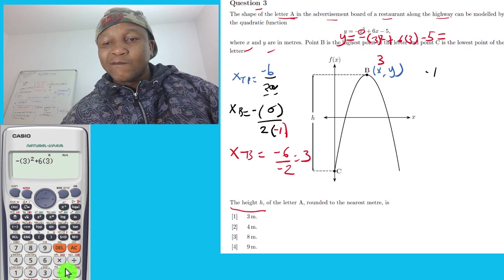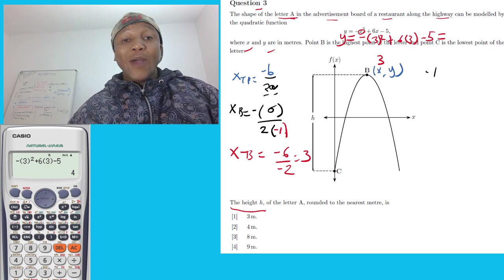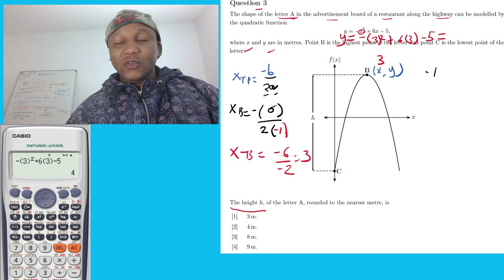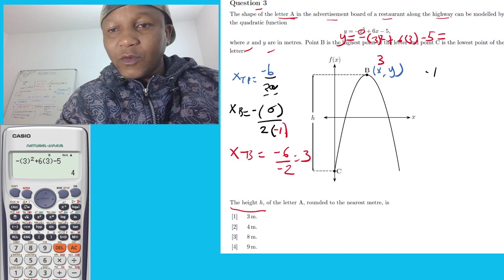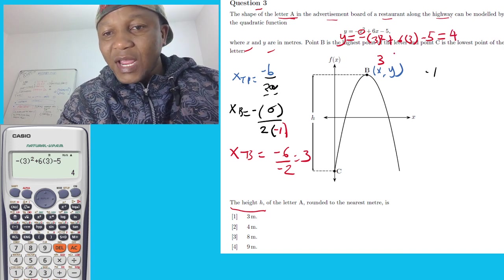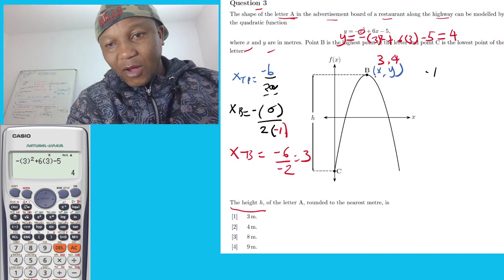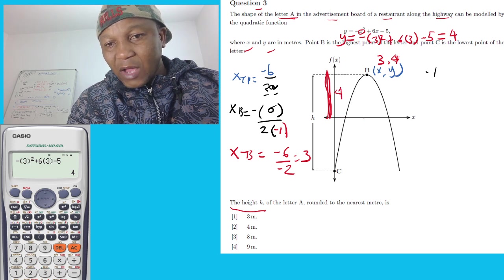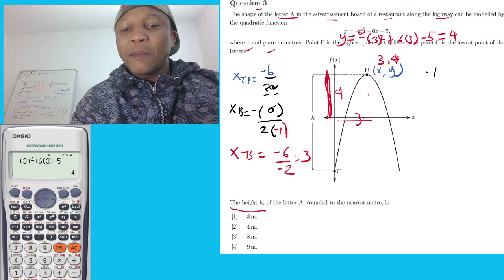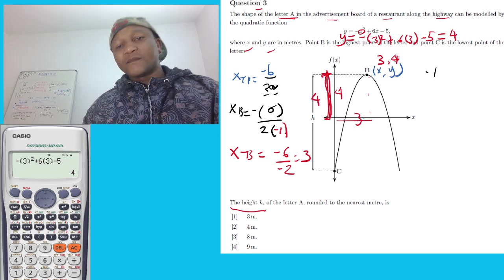This gives us y at point B equal to 4. So y at B equals 4. At point B: x equals 3 and y equals 4. That means the vertical length from the base up to the turning point is 4 — the y-value — and the horizontal distance is 3. So the height h equals 4.